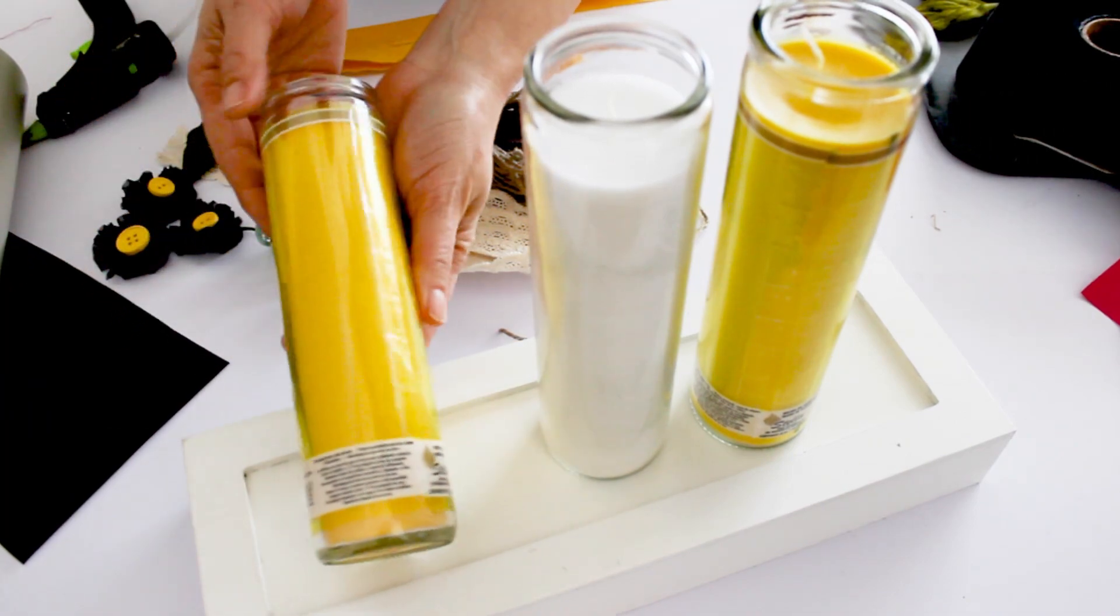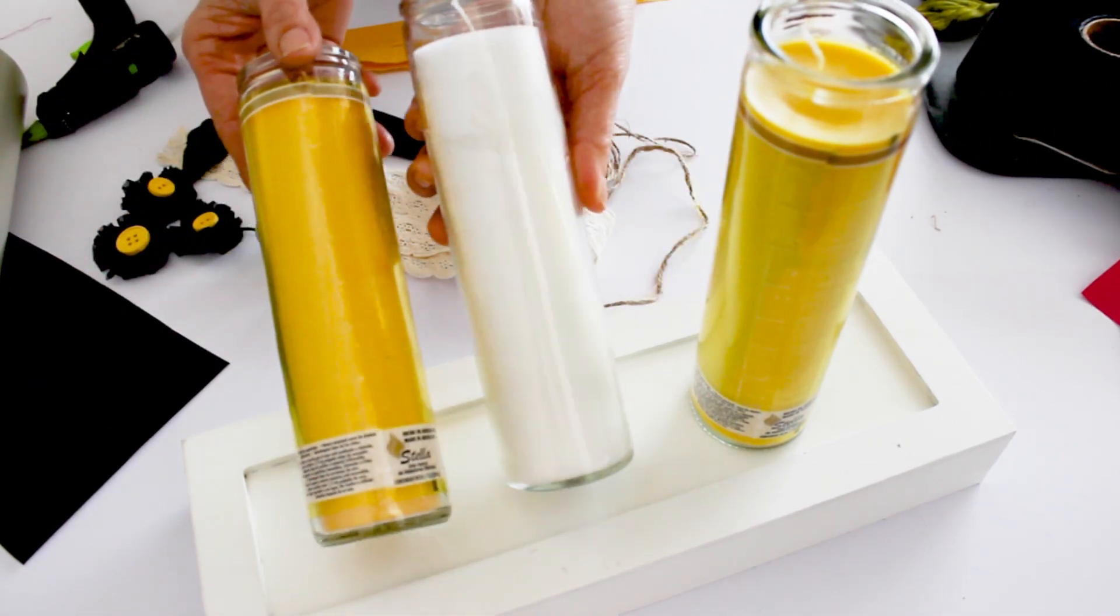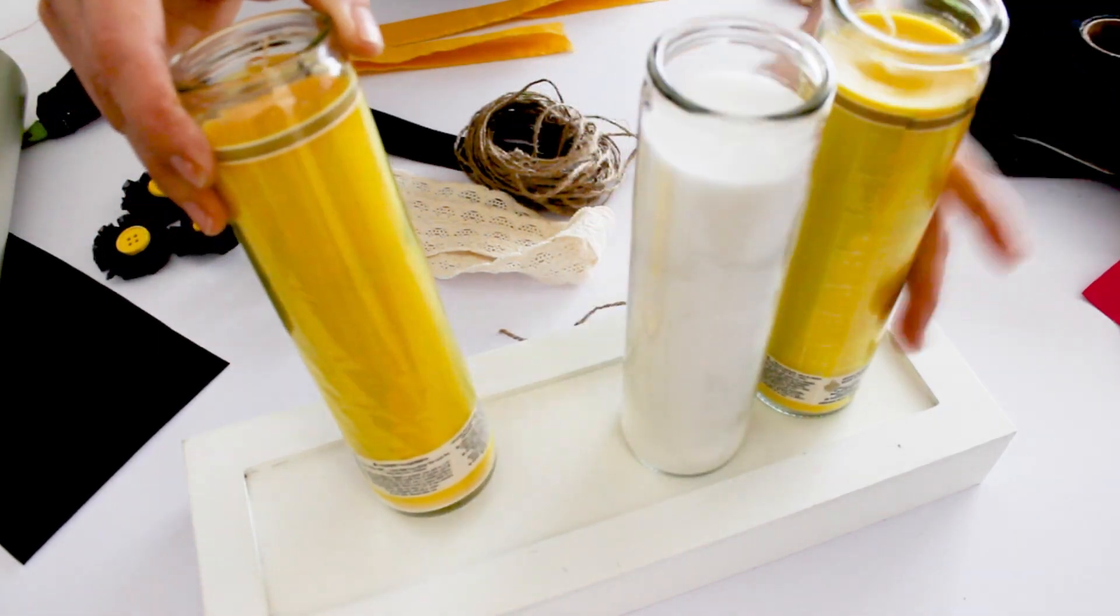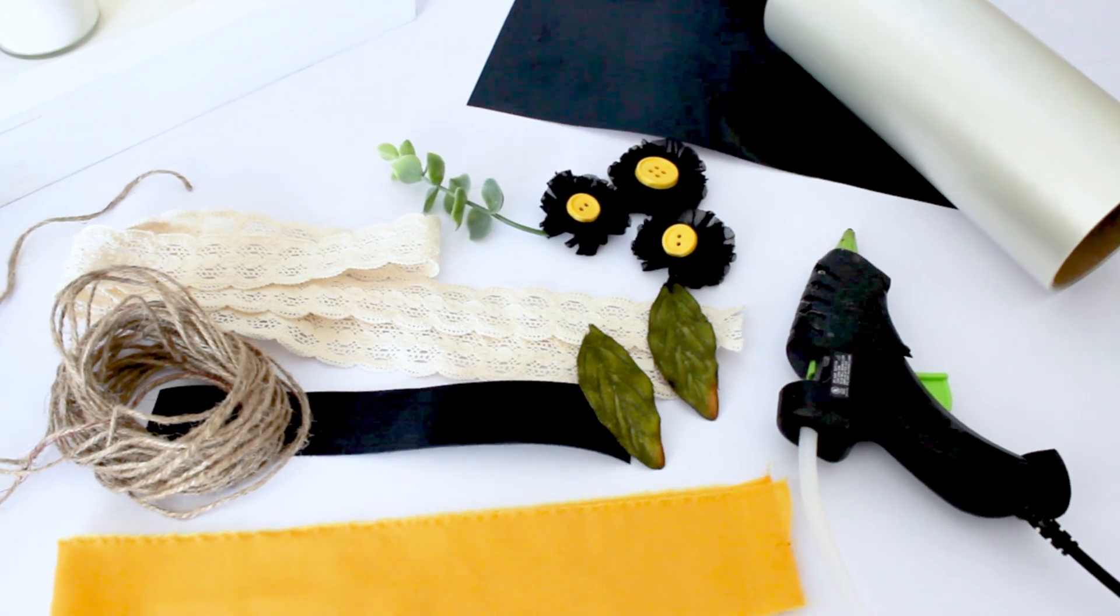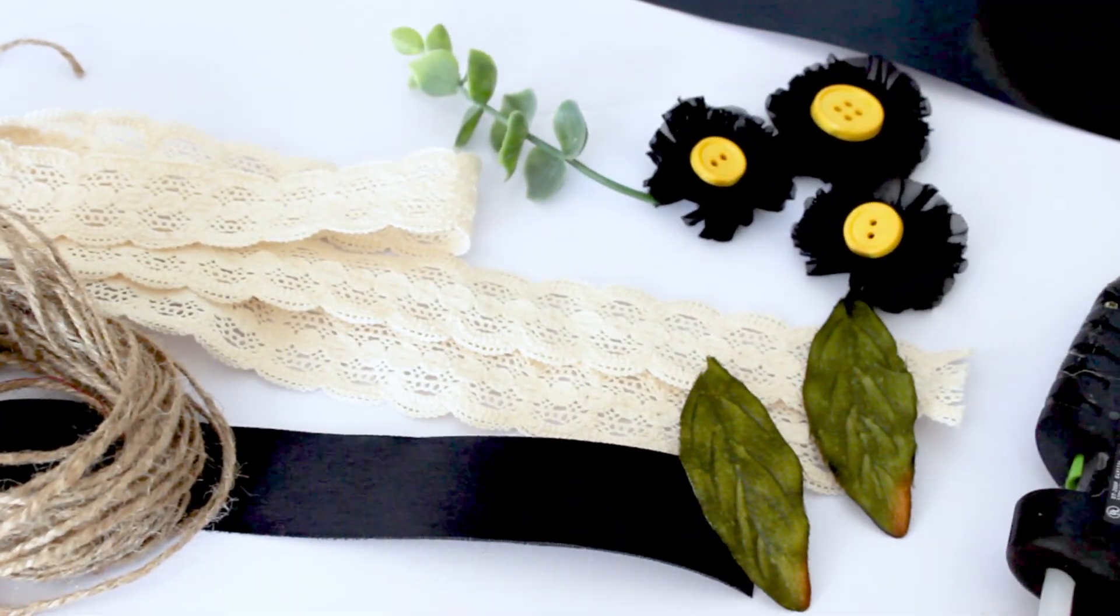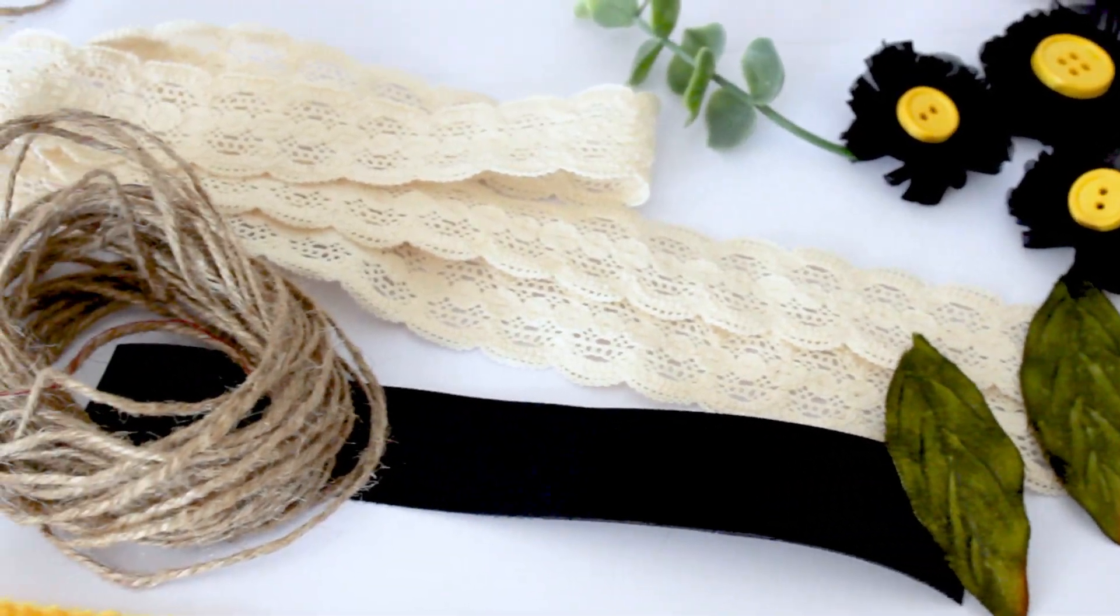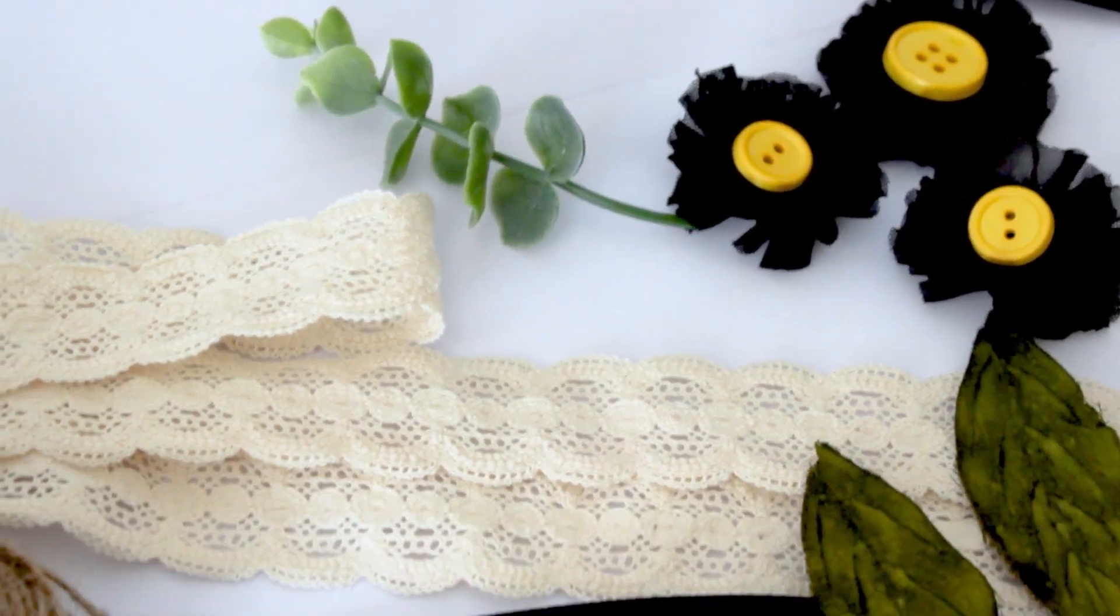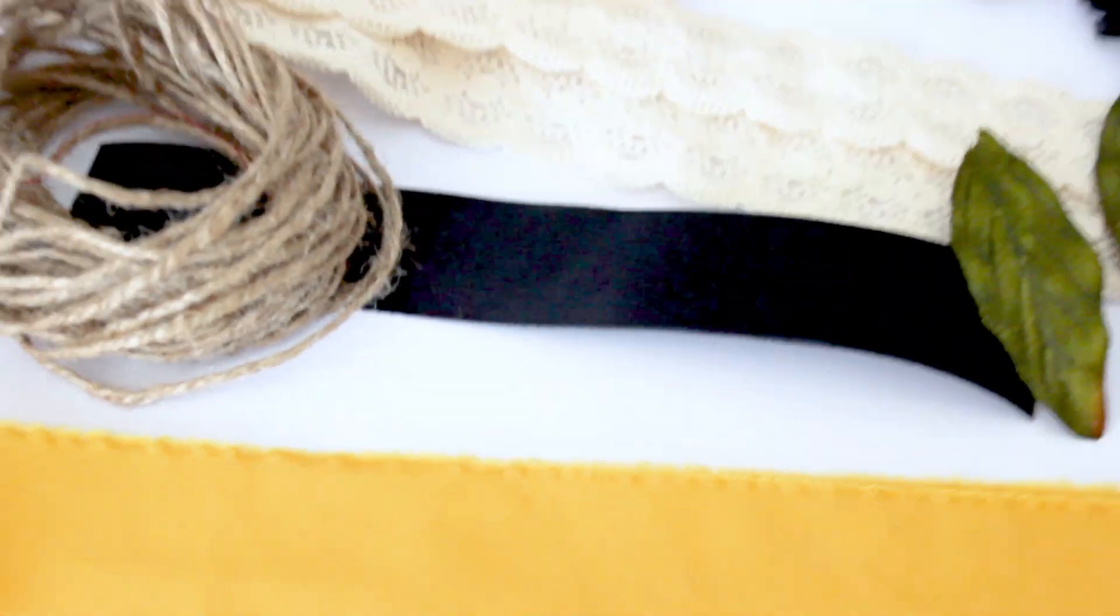For this project, we're going to need glass jar candles from the Dollar Tree. They have a lot of beautiful colors to choose from. And to decorate them, we're going to need ribbon, jute twine, little flowers, buttons, leaves, or anything you can think of to make it look pretty, and a hot glue gun.